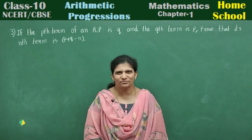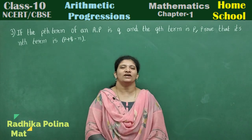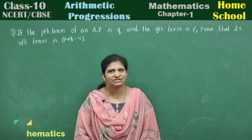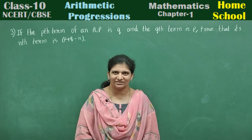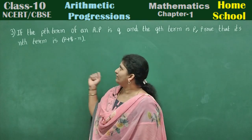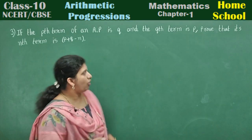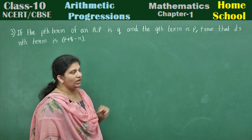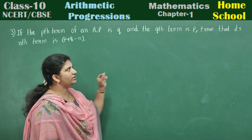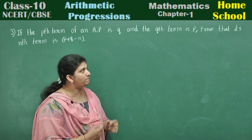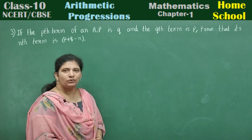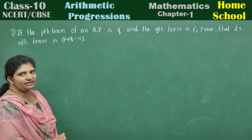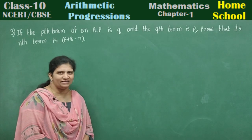Hi, hello, welcome to home school. This is your class 10 mathematics and important questions in chapter arithmetic progression. If the pth term of an AP is q and the qth term is p, prove that its nth term is p plus q minus n.